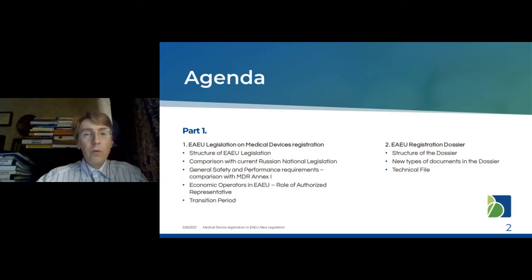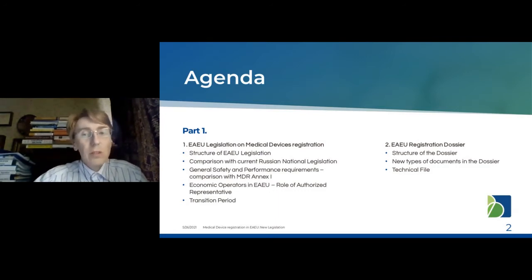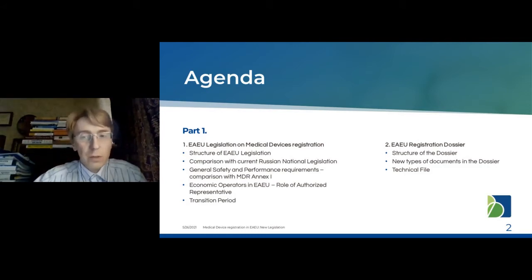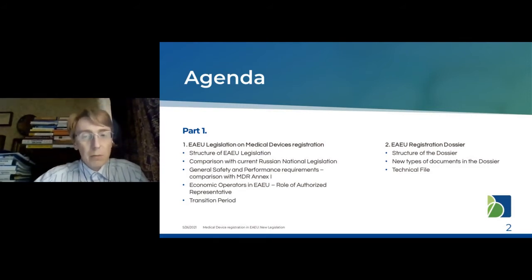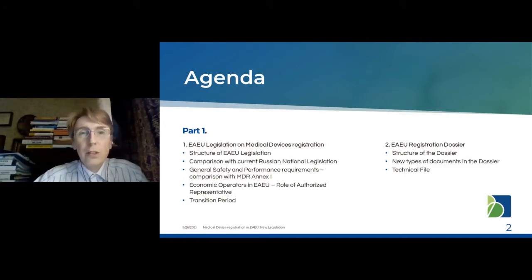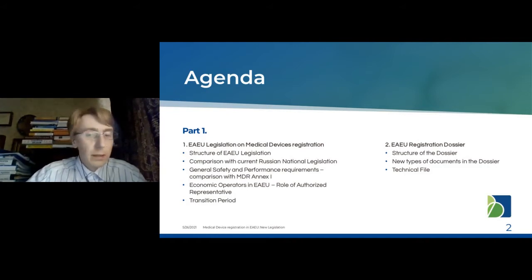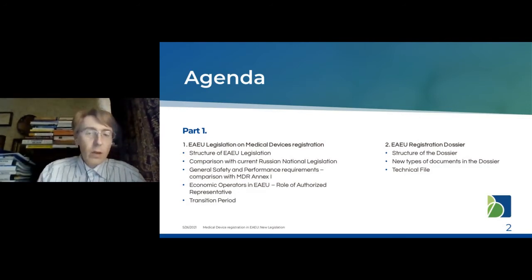We will also review the structure of Eurasian Union legislation, because there are a lot of normative acts with different names: agreements, decisions of the council, decisions of the board, decisions of the collegium, decisions of the commission, etc. We will make some comparisons between European Union MDR, the national Russian registration system, and the new Eurasian system to understand the similarities and differences. We will also cover what is a medical device in accordance with the new rules, and what are the risk classes.